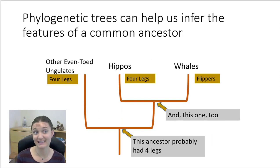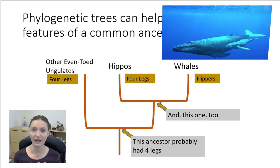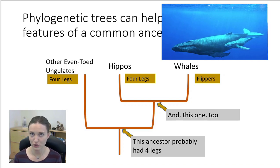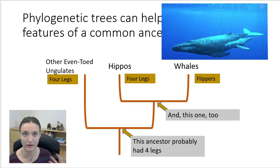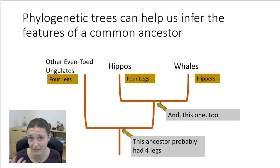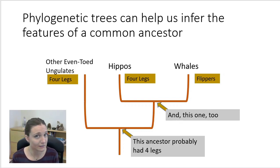Phylogenies can help us infer the features of a common ancestor. Looking at whales as an example — whales are mammals, and for a long time we weren't totally sure how whales were related to the rest of mammals. It was very unclear, kind of a big black box in biology. They have all the characteristics of mammals: mammary glands, subcutaneous fat, they give birth. But how they really fit in, we didn't really know.